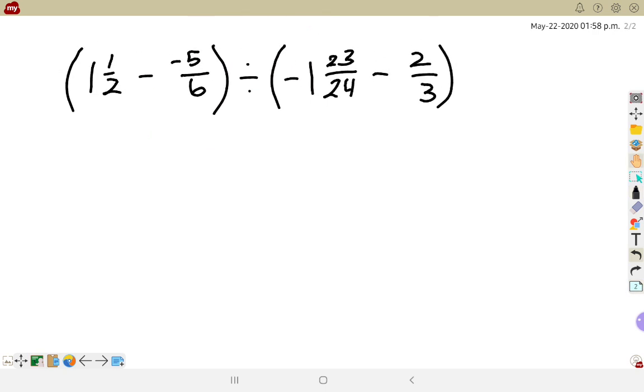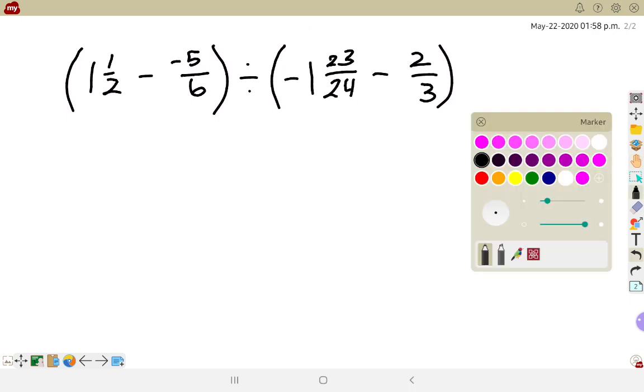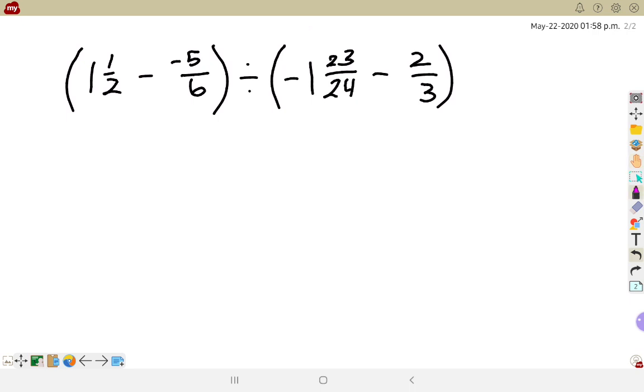So I've got a little bit more going on here. I've got 1 and 1 half minus negative 5 sixths is being divided by negative 1 and 23 over 24 minus 2 thirds. And I do have two sets of brackets. Nice thing about having these two sets of brackets, because they're separate from one another, I can actually look at both things at the same time. So the first thing I'm going to do is get rid of these mixed numbers.